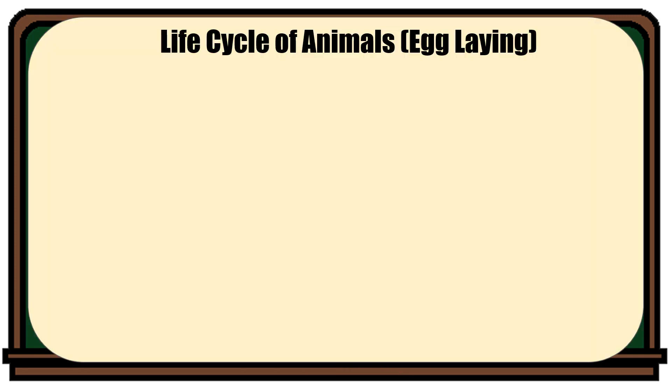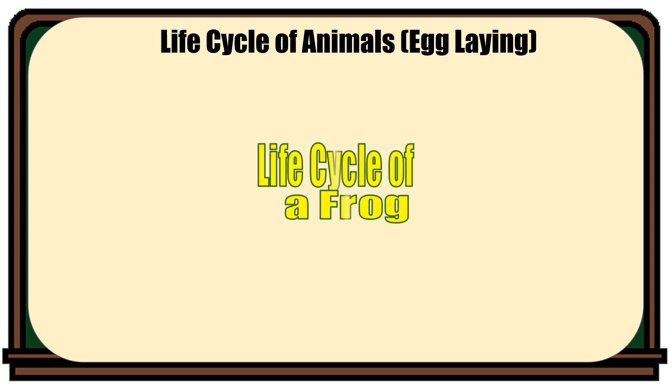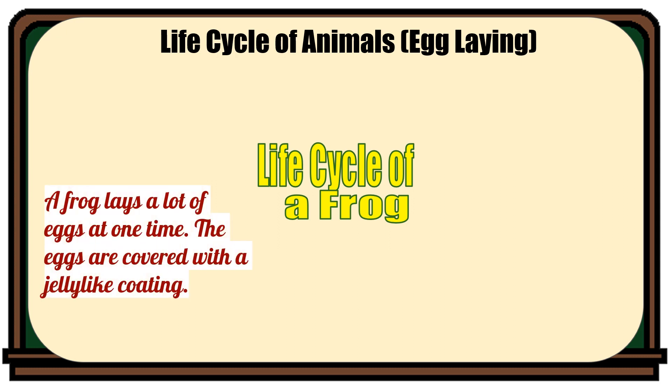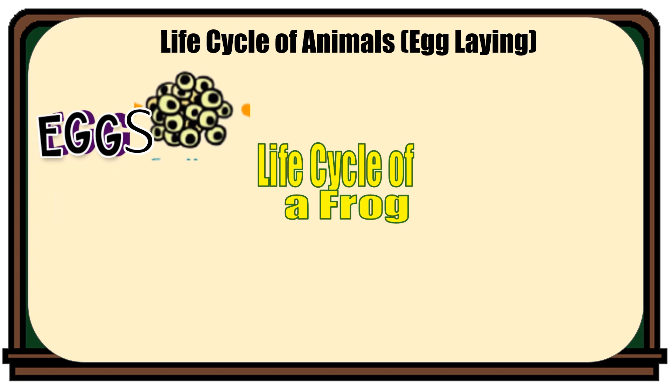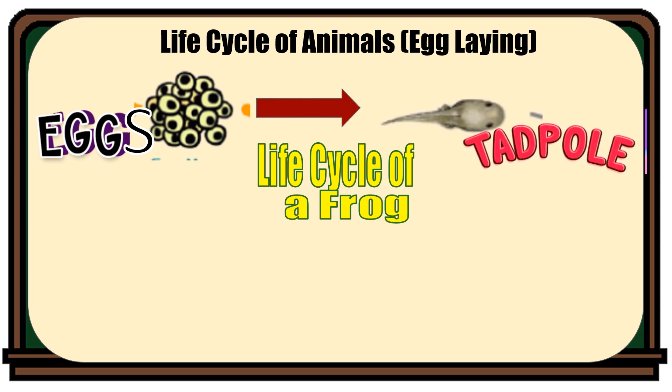Here is another example of egg-laying animals, which is the frog. Let us find out the life cycle of a frog. The first stage: a frog lays a lot of eggs at one time. The eggs are covered with a jelly-like coating. After the eggs hatch, after about 10 days, the fertilized eggs develop into a young tadpole.